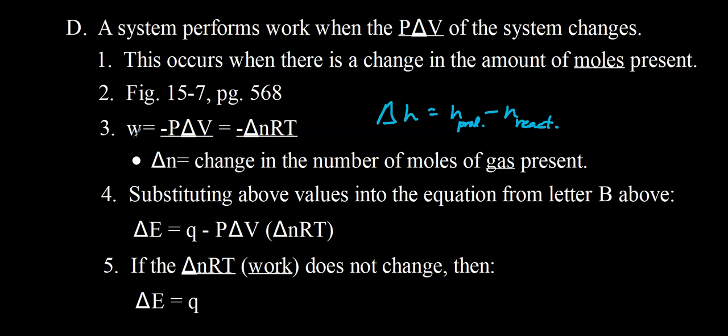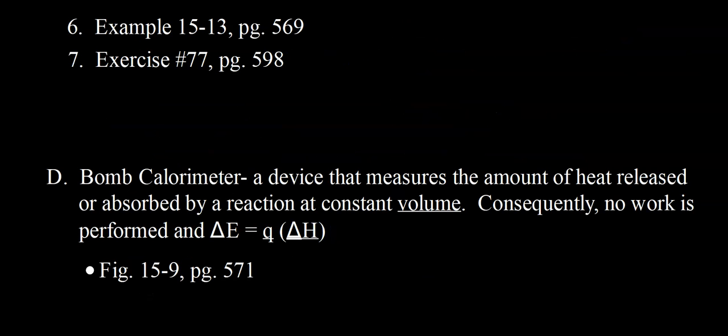If no work is being done — which is usually the case when we haven't accounted for work — then delta E equals Q. Sometimes we write Q as delta H, so delta E equals delta H.